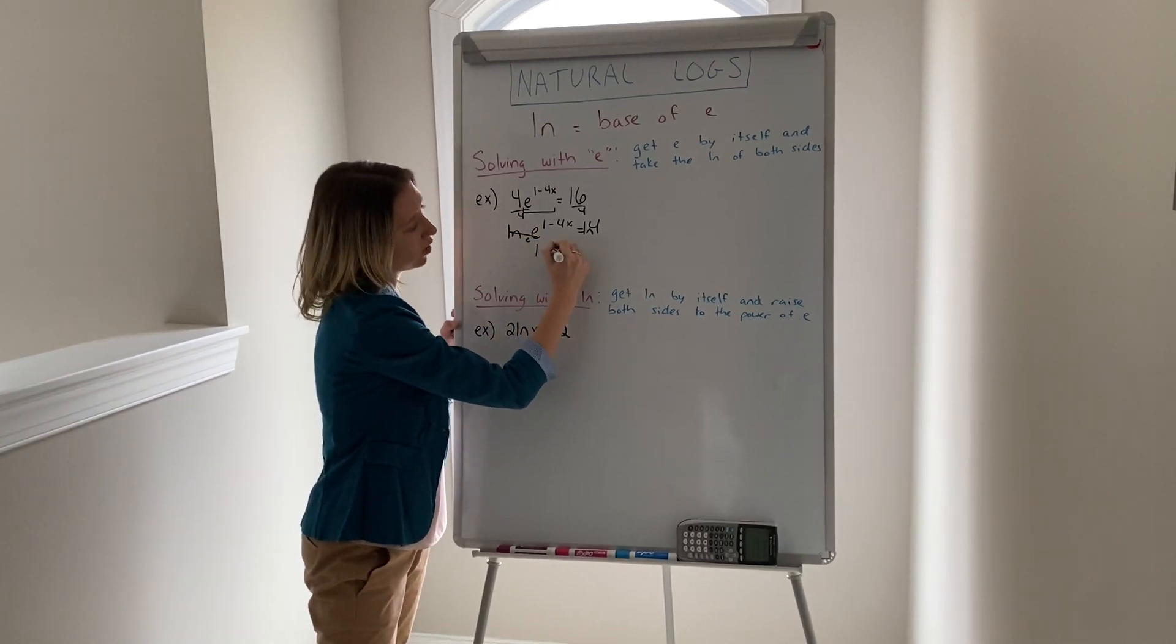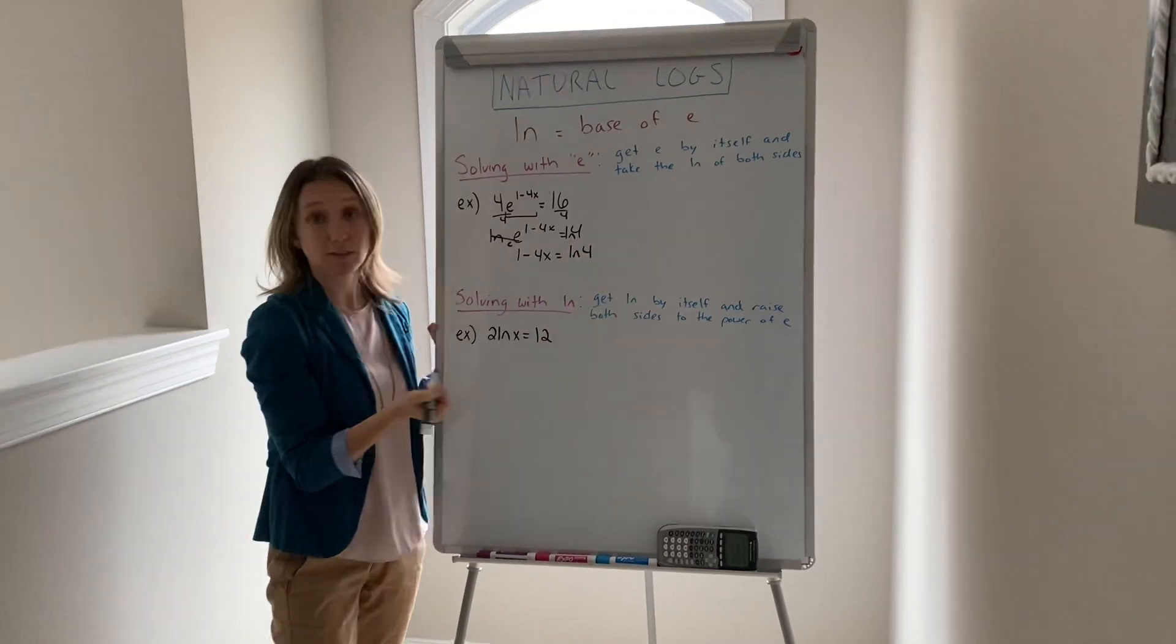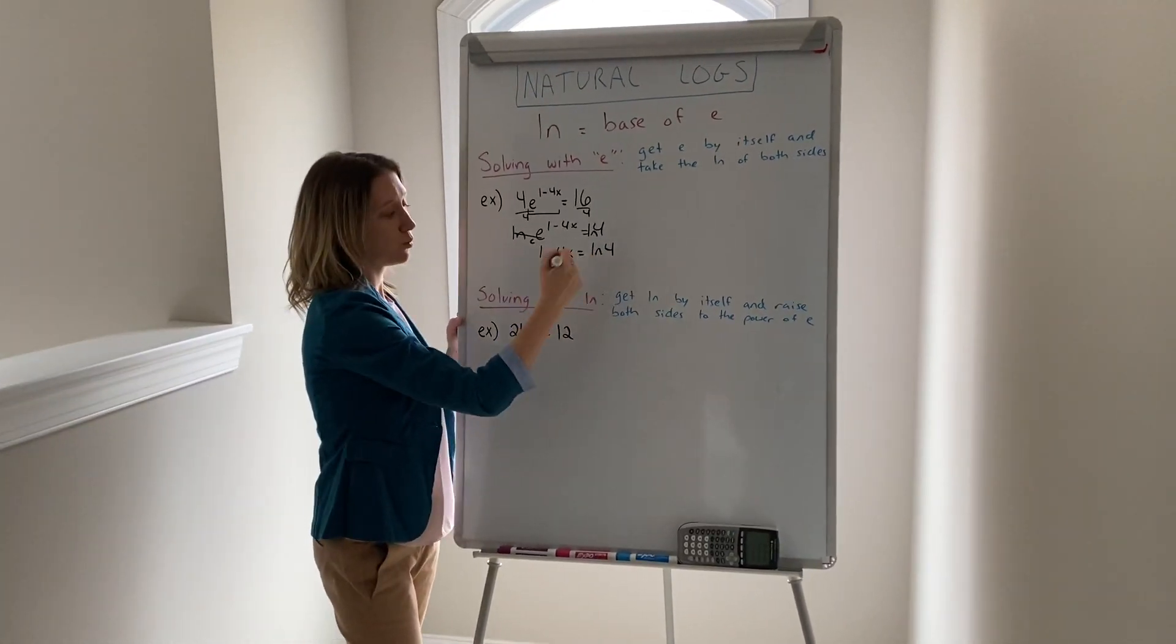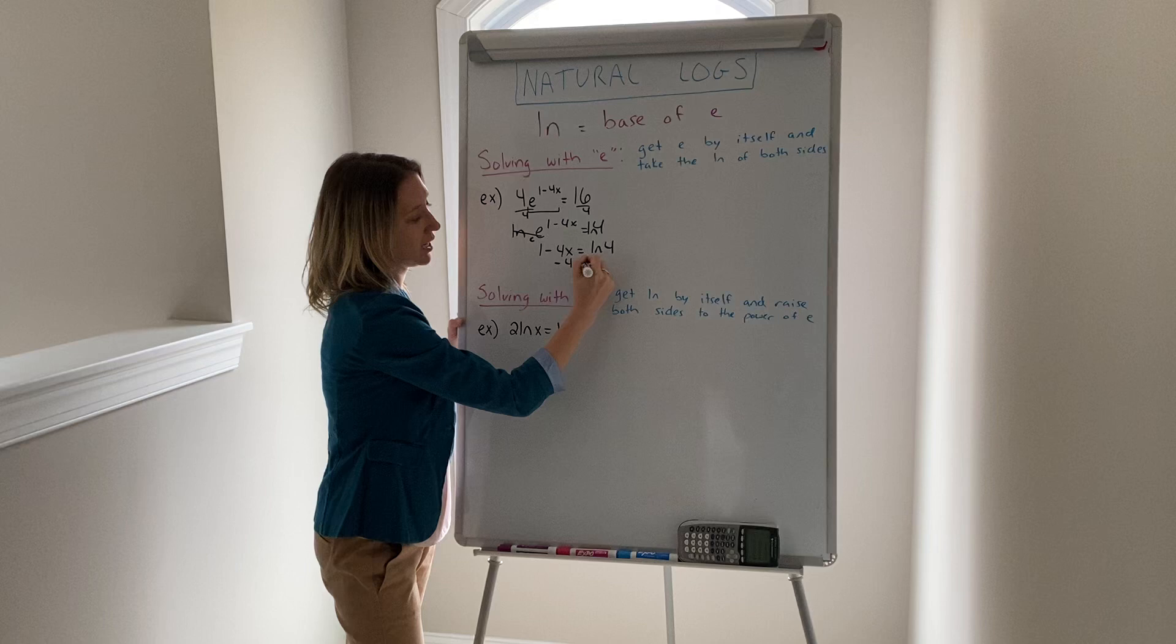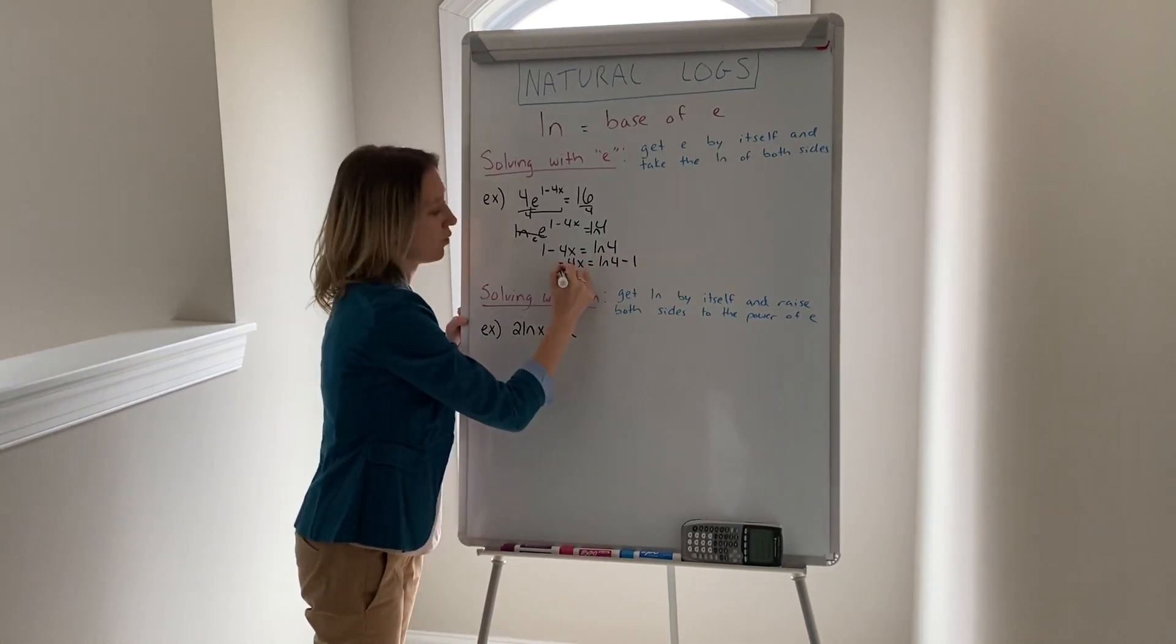So we have 1 minus 4x equals the natural log of 4 and now we just have to solve for x. We would subtract 1 from both sides. So negative 4x equals natural log of 4 minus 1 and then we divide by negative 4.